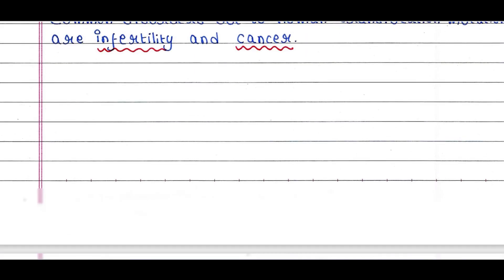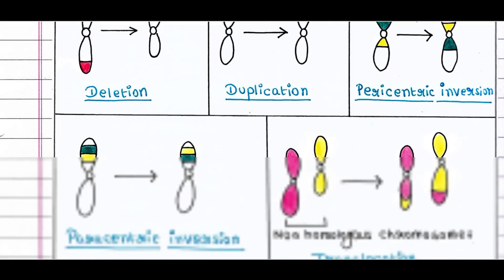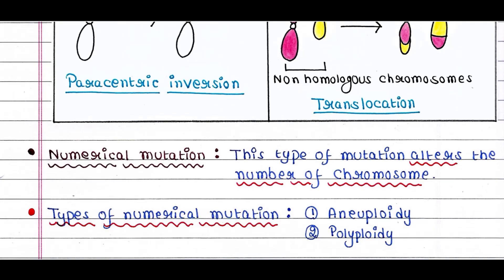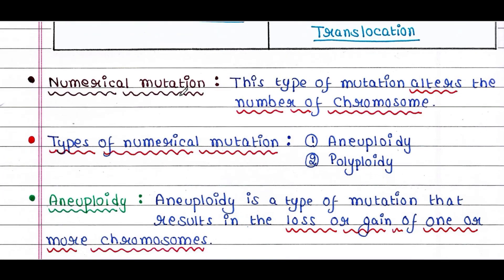Next we will talk about numerical mutation. This type of mutation alters the number of chromosomes. There are two types of numerical mutation: aneuploidy and polyploidy.